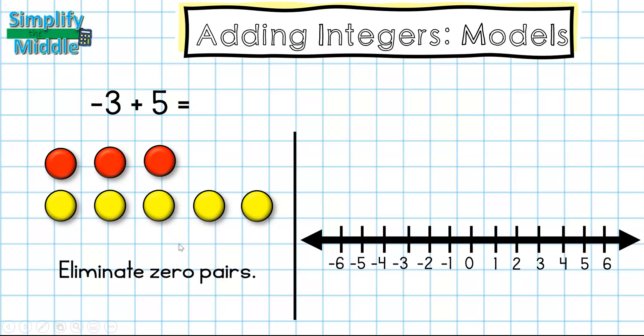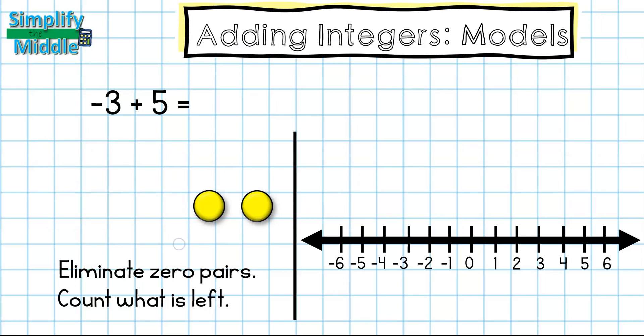That is my next step. So I can see here I actually have three sets of zero pairs. You can box them like this and cross them out or since we're using hands-on manipulatives I can simply just get rid of them and whatever is left is going to be my answer. So here I have two yellow chips and yellows are positive so I have positive two as an answer.